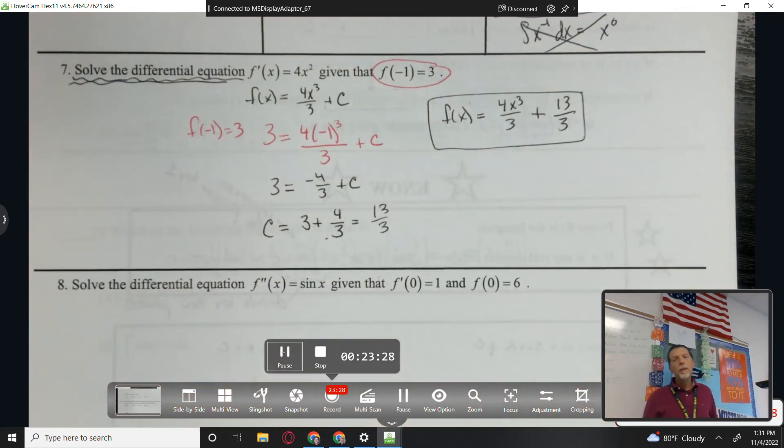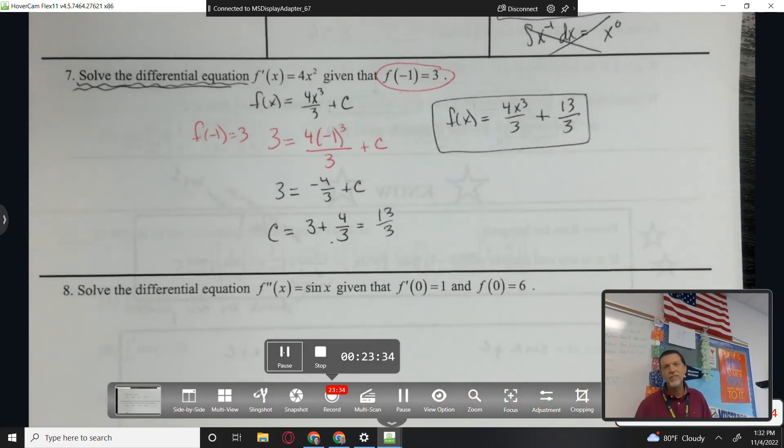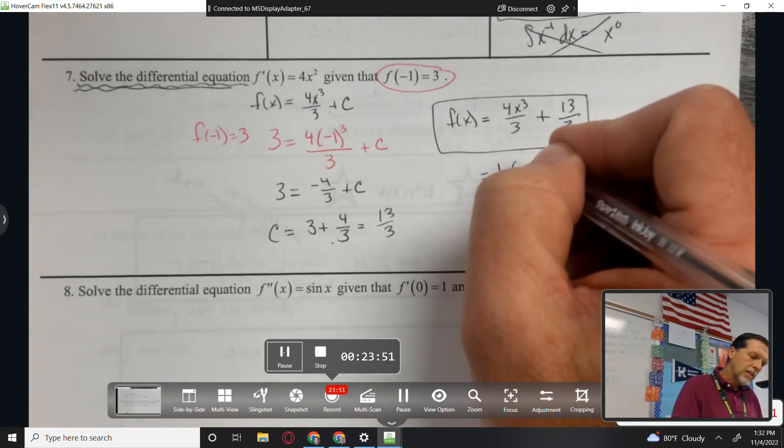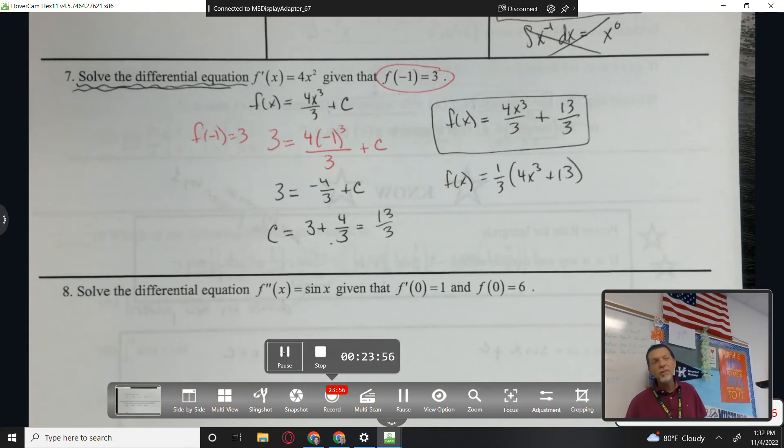But you're right, you could leave it as 4x cubed over 3 plus c because you've identified what c is. Could you take away those... it's kind of annoying for me as a teacher, but it's completely legal. What's up? Could you take away those divide by 3s because they're both... is that allowed? No, they need to be there. I mean, you could factor them out and put like one third out front. But you couldn't make them go away. Okay. You know, like if you set it equal to 0, you could make them go away. But we don't have that. We have f of x.